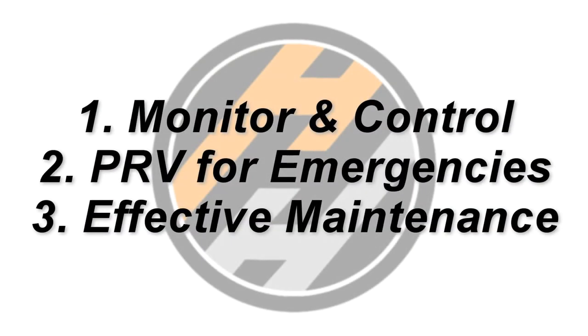So the three rules again are number one, monitor and control the pressure in the silo. Number two, have a PRV for emergencies only. And three, make sure equipment is properly maintained.